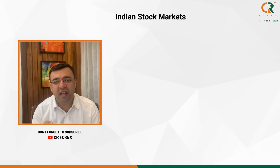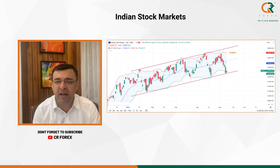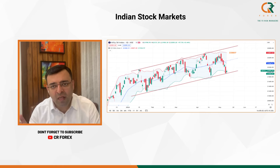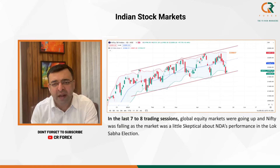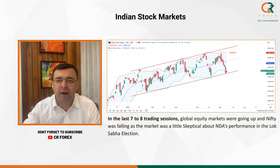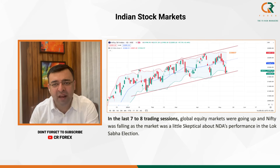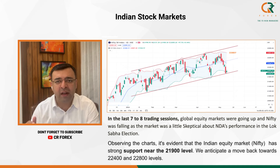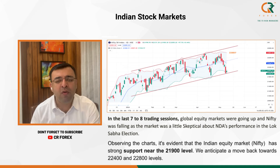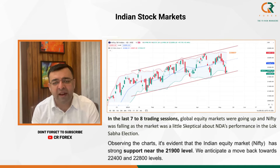Now let us understand the impact on Indian markets. If you see the Nifty chart, it is giving a clear indication that it is standing near the support level. Nifty has fallen close to 700 to 800 points in the last seven to eight trading sessions due to negative news around Lok Sabha election seat projections. But technically, charts indicate that 21,900 is going to act as a strong support for Nifty, and it will gradually move towards 22,400 and 22,800 in the next 15 to 25 trading sessions.